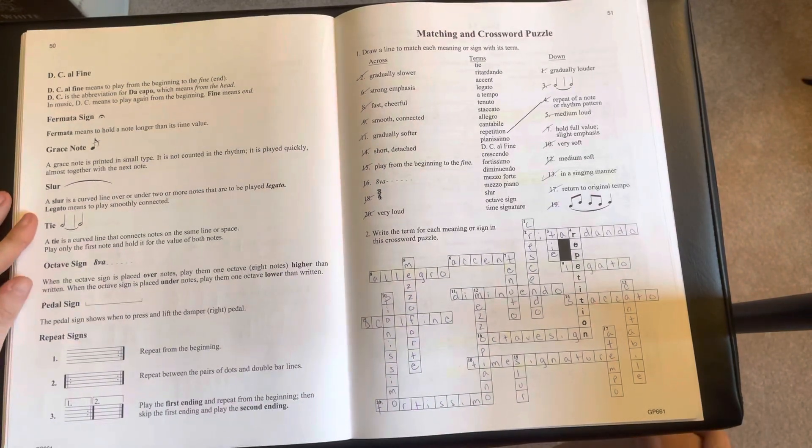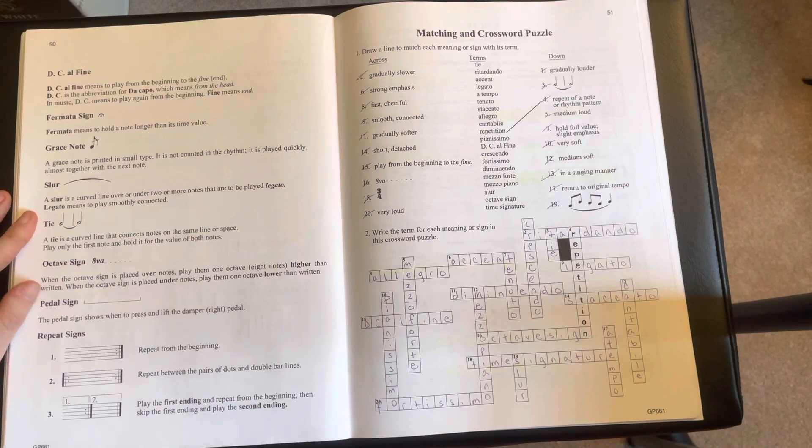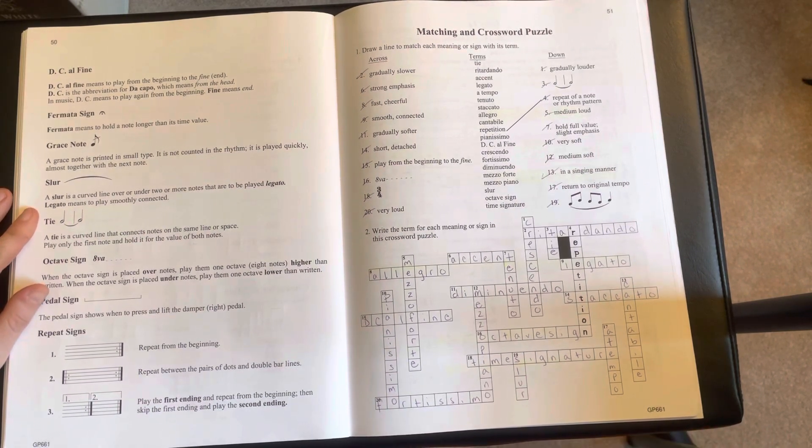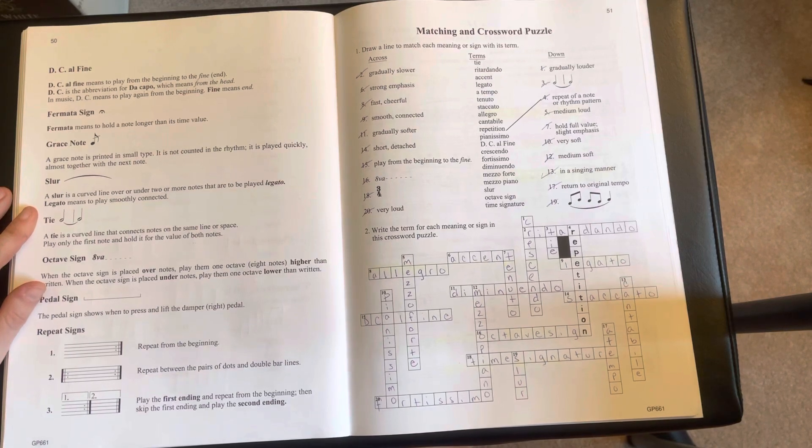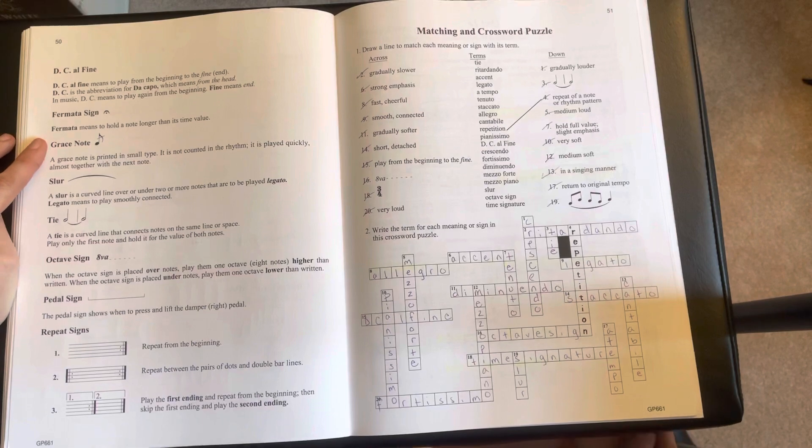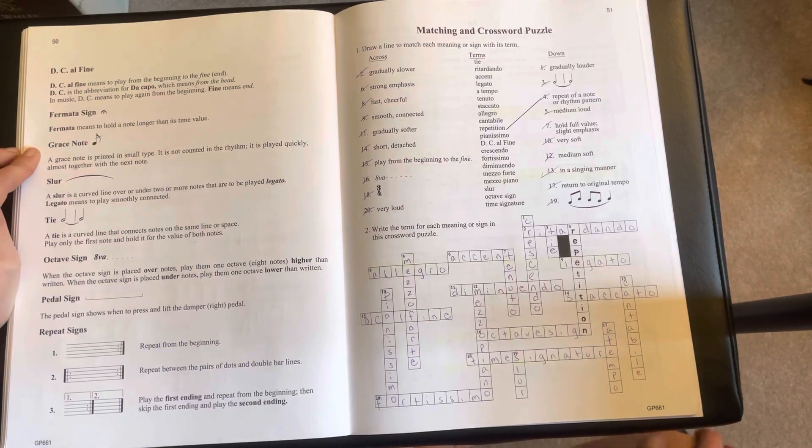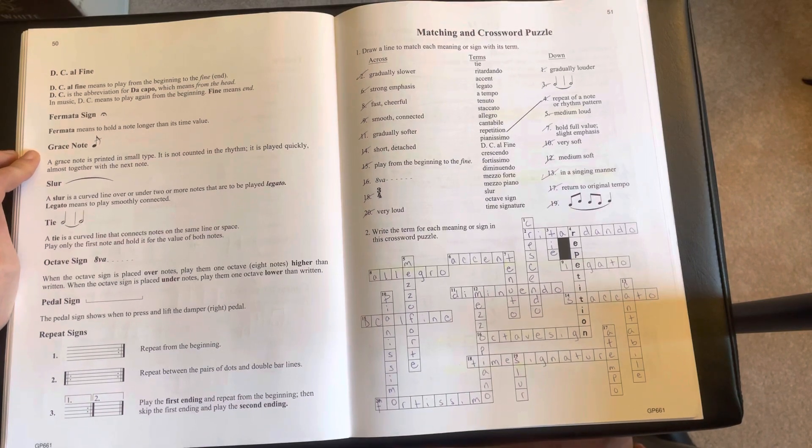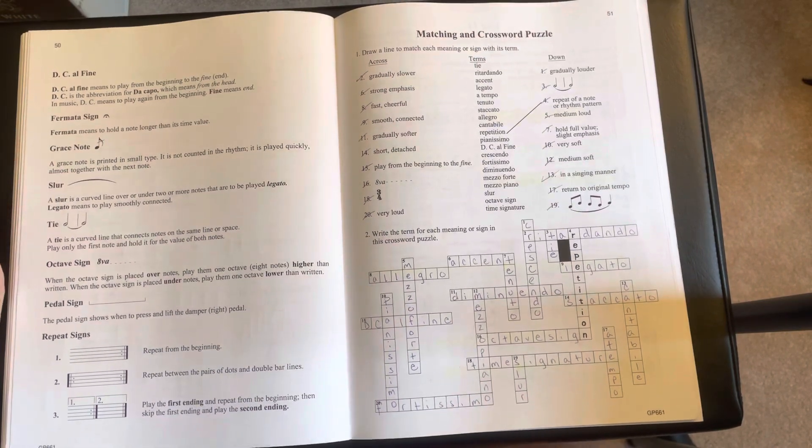Some more terms, the newer ones that they've added in for this book, we have DC al fine or da capo al fine. Go back to the beginning and play to the end, which is the fine. A fermata sign, which means to hold the note longer than its full value. A grace note is played quickly, either before the beat of the note or on the beat of the note, depending on what time period you're playing.